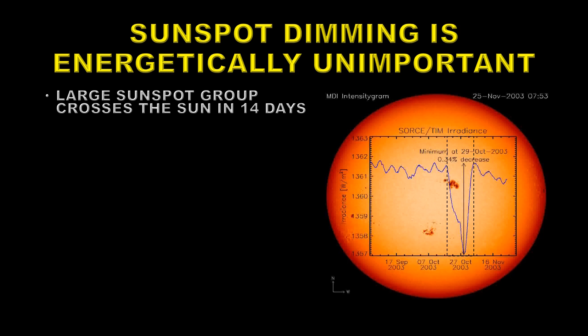As they come over the limb, they are less effective than they are when they're at sun center. And then as they go towards the other limb, their effect decreases yet again. The overall dimming here is about 0.34% in this particular case. And this is a large sunspot group. So the average dimming over this two week period is going to be 0.15%.